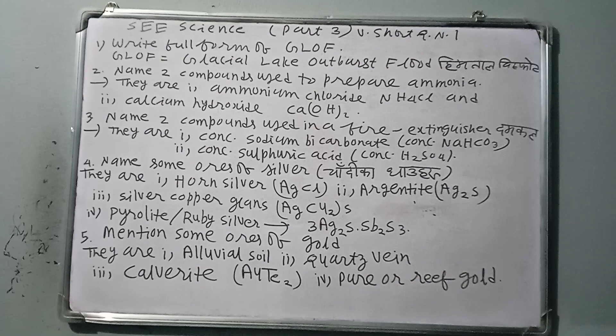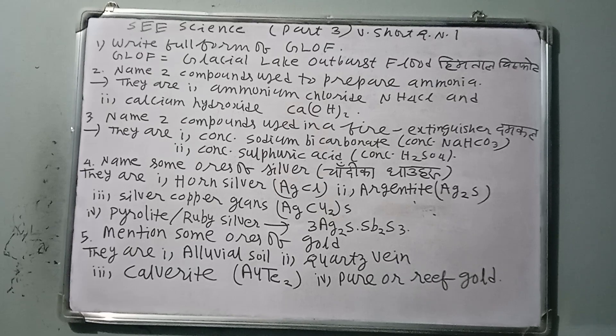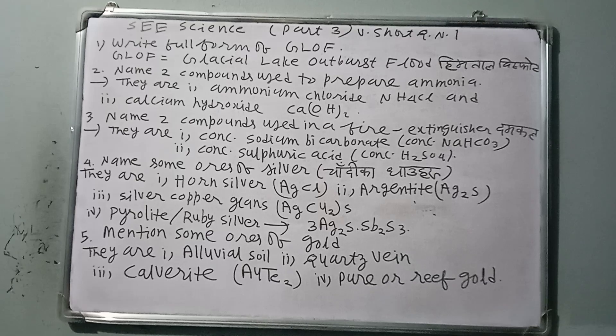Question number two: Name two compounds used to prepare ammonia gas. The two compounds used to prepare ammonia gas are ammonium chloride NH4Cl and calcium hydroxide Ca(OH)2.